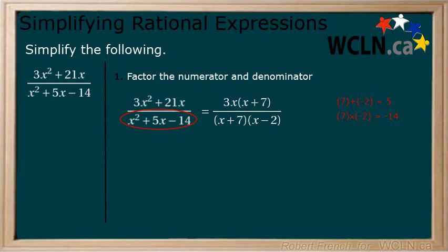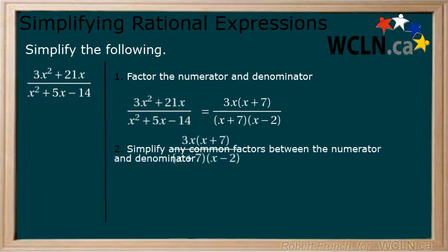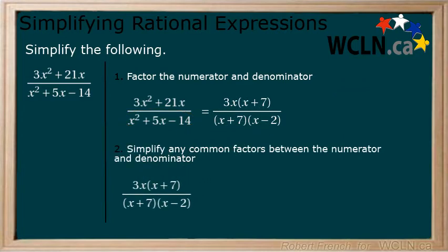Now that our numerator and denominator are fully factored, we can move on to Step 2: Simplify any common factors between the numerator and the denominator. We can see that x plus 7 is a common factor and can be cancelled, leaving us with a final answer of 3x over x minus 2.